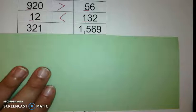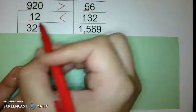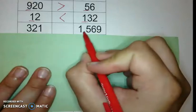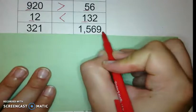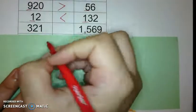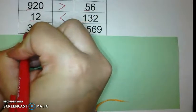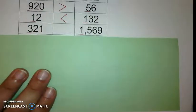So if you've tried this one on your own, then you have read the numbers 321 and 1569. You found the highest place value, which is the 3 in the hundreds for this number, and the 1 in the thousands for this number.